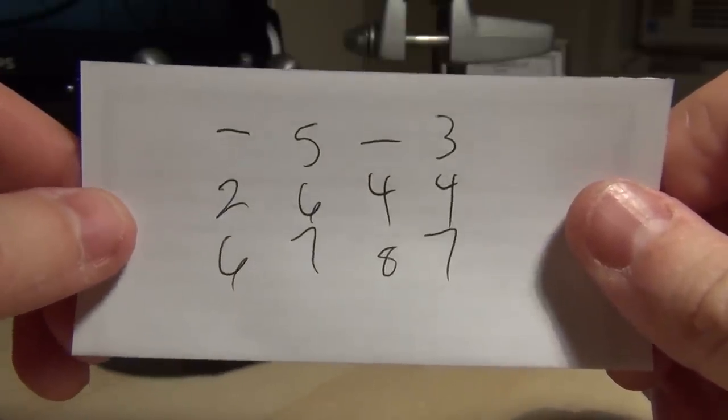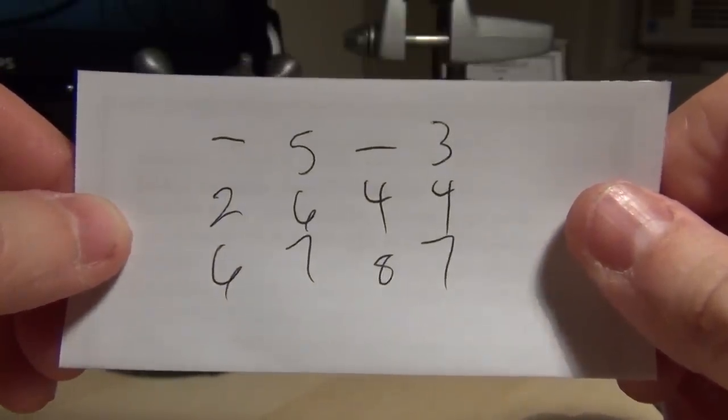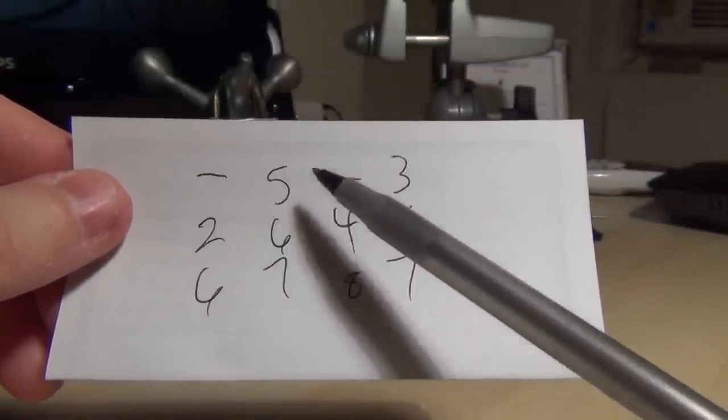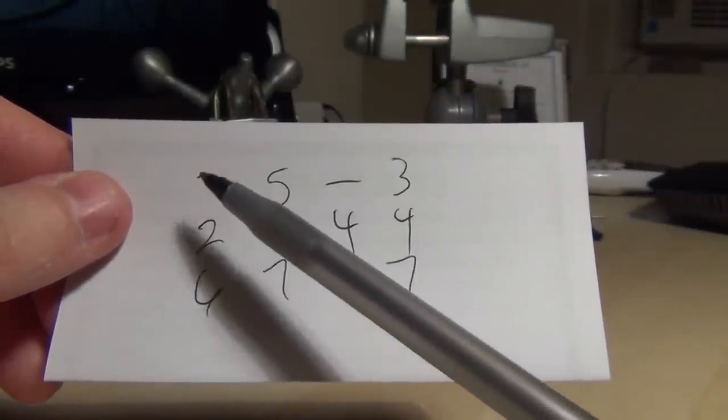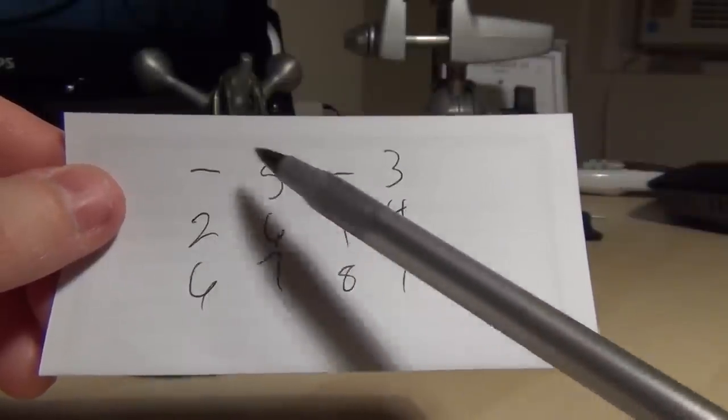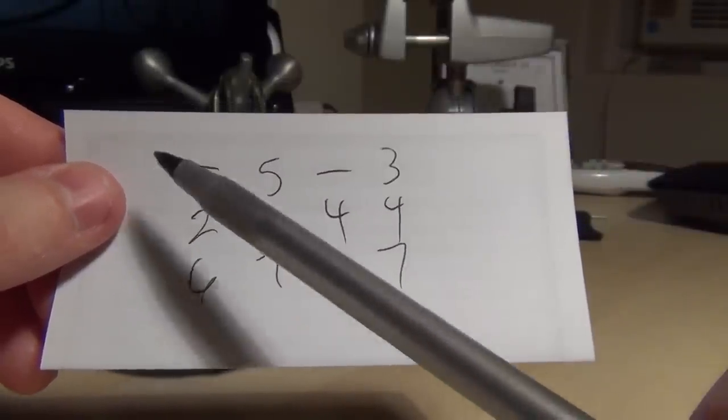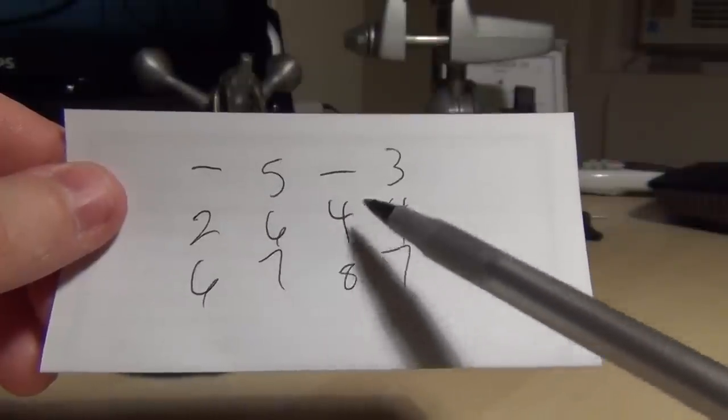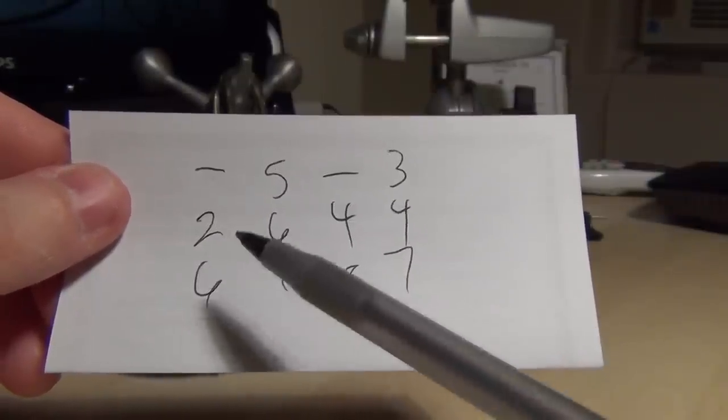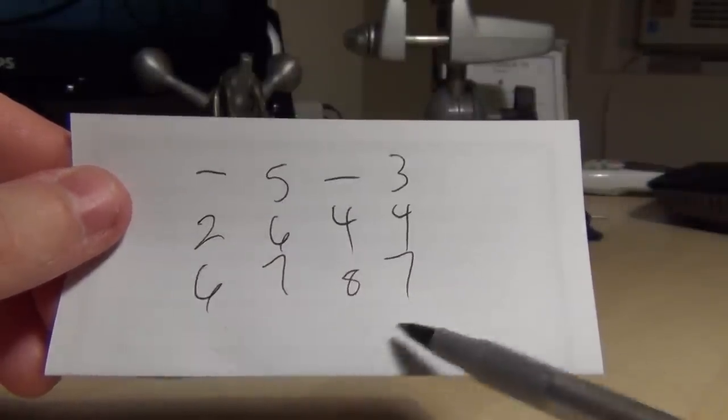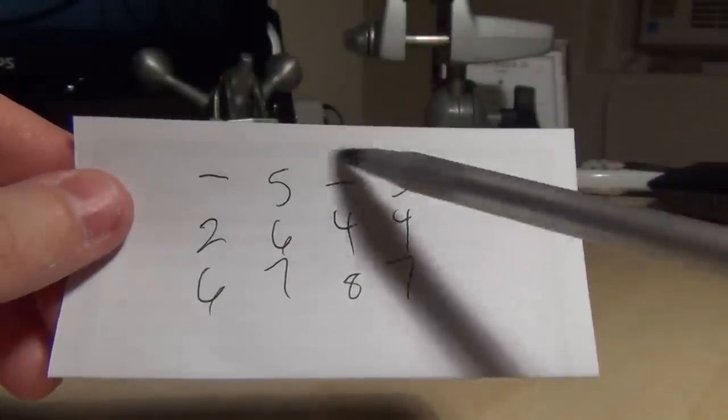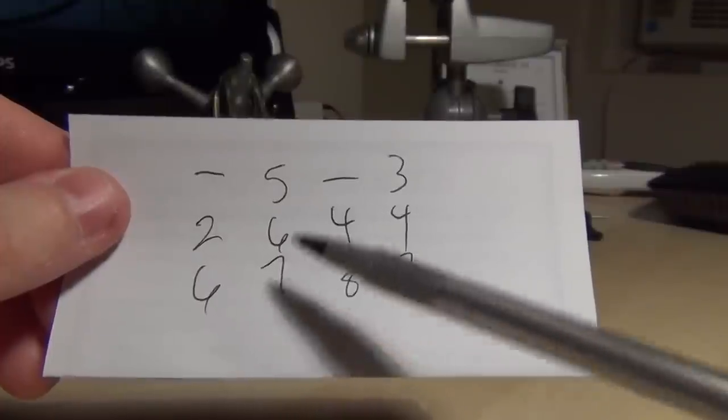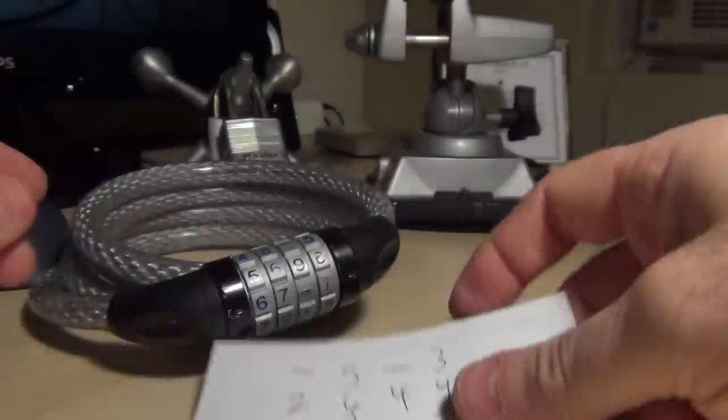So out of ten thousand combinations we've now narrowed it down to 81 possible combinations that we can now brute force our way into this thing. What I'm going to do first off is set it to dash five dash three, and then I'm going to go dash five dash four, dash five dash seven, and so on until hopefully I don't have to exhaust all 81 of them. We'll just set this down here and we'll get to work.